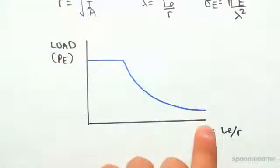The last thing we need to talk about is this graph here, which plots a load against the slenderness ratio. Now, if your slenderness ratio is greater than a certain value, you would use the Euler buckling formula.